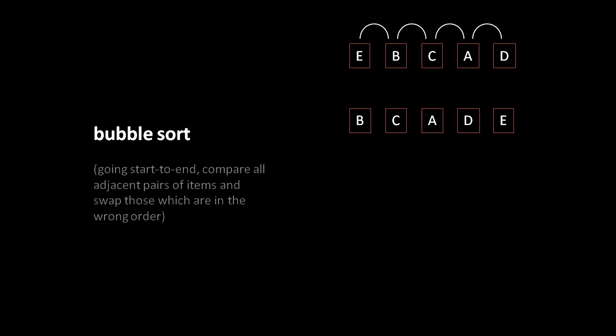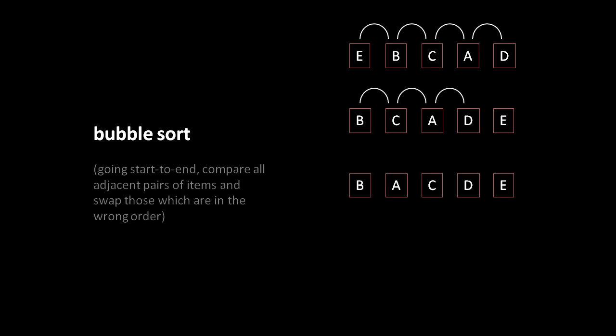The list is still not sorted, but this is just our first pass. We now do a second pass, but this time we do one less comparison and swap. We compare B against C — correct order, no swap. Then C against A — out of order, swap. A ends up in second position and C in third. Then C against D — correct order, no swap. After our second pass, we end up with B, A, C, D, E.